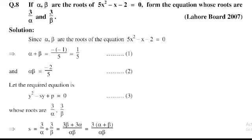Since alpha and beta are the roots of the equation 5x² − x − 2 = 0, the coefficient of x² is a = 5, the coefficient of x is b = −1, and the constant term is c = −2.